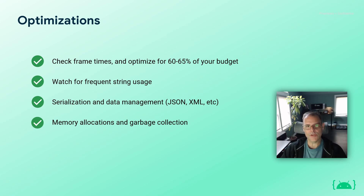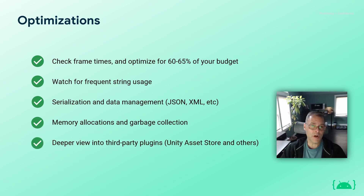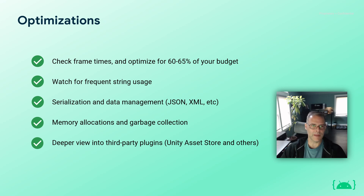Consider things like pooling your game objects instead of instantiation on need — pool and instantiate on startup, then reuse as opposed to doing the create-destroy loop. Also take a deeper view into any third-party plugins you may have downloaded from the Unity Asset Store or other sites. These need to be carefully examined for any issues with performance, optimizations, and needs specific to your target platforms.